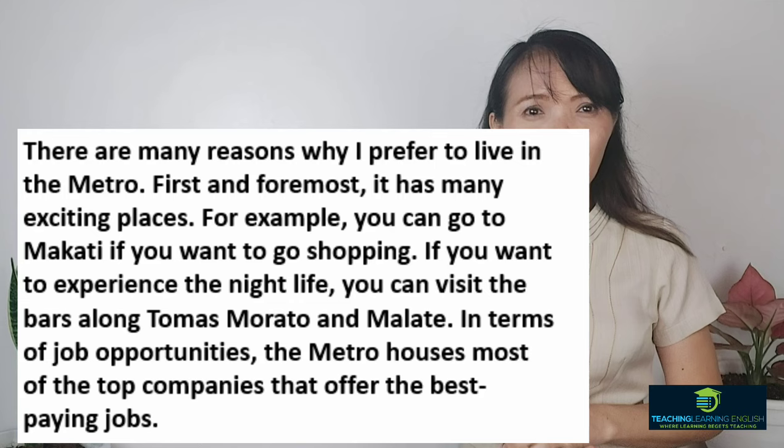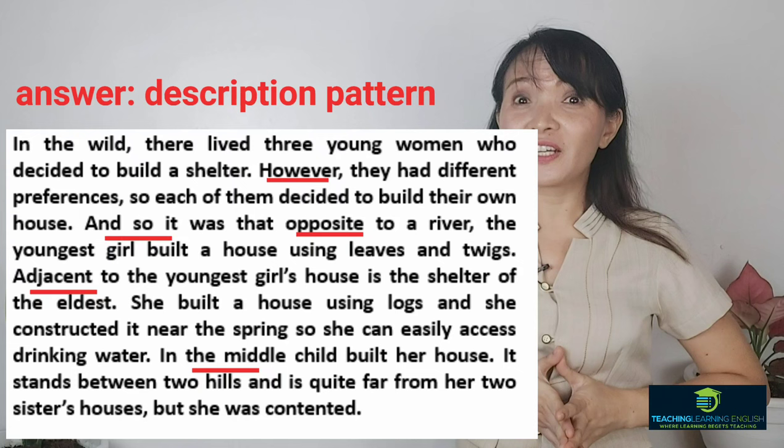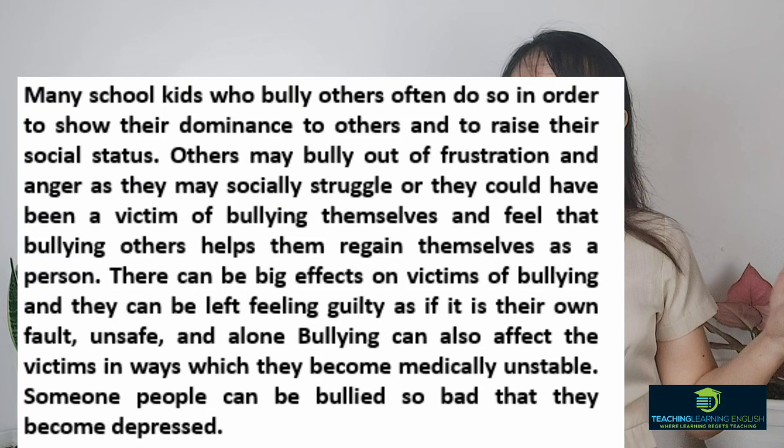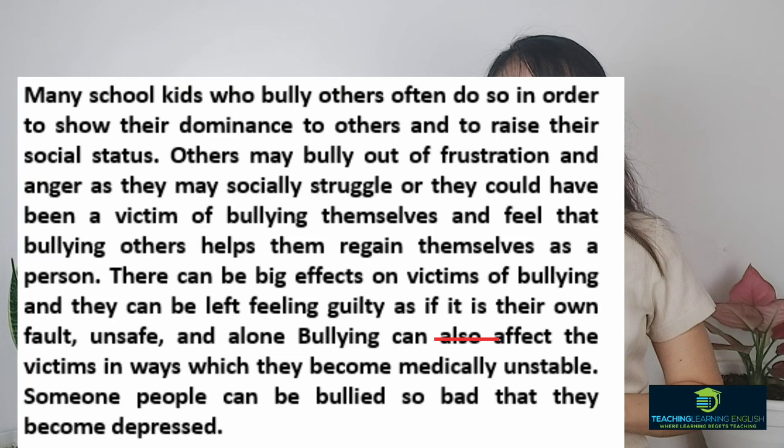The eighth paragraph — the second to the last — has underlined signal words, and the pattern is description. The final paragraph is about bullying in school. The signal words are the underlined ones, and the pattern is cause and effect.